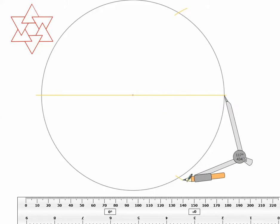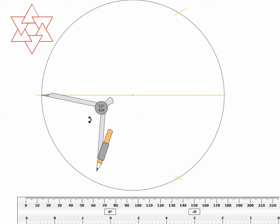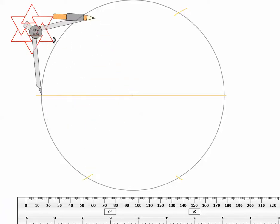Then you're going to take your compass and place it on the other intersection of your diameter and your circle. And do the same thing. You're going to make two arcs, one on either side of your diameter.